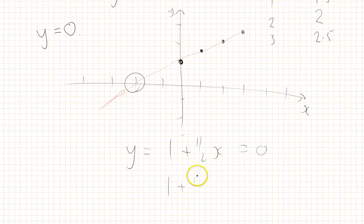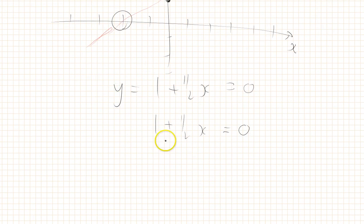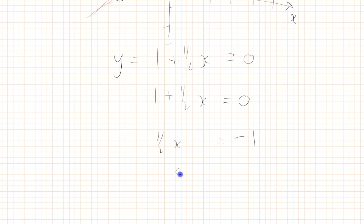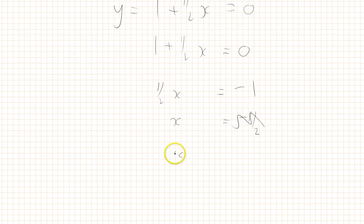So 1 plus 1 half x equals 0. And it's pretty clear to see what's going on. If we subtract 1 from both sides, we get 1 half x equals minus 1, because this 1 we've subtracted that. So that says that x equals minus 1 half. Sorry, that says that x equals minus 1 divided by 1 half, which equals 2.